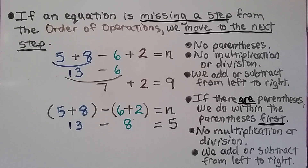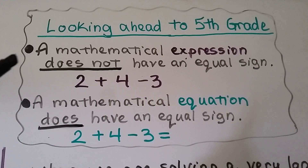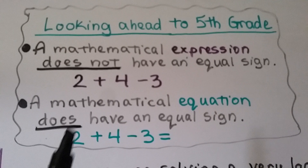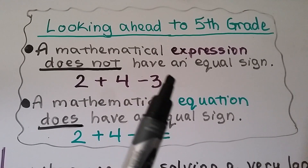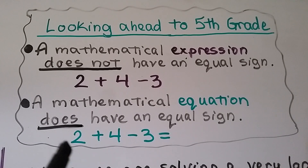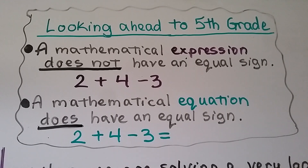Anytime something is missing from the order of operations, just go to the next step. Looking ahead to fifth grade: a mathematical expression does not have an equal sign — for example, 2 plus 4 minus 3. A mathematical equation does have an equal sign. An expression has no equal sign; an equation has an equal sign.